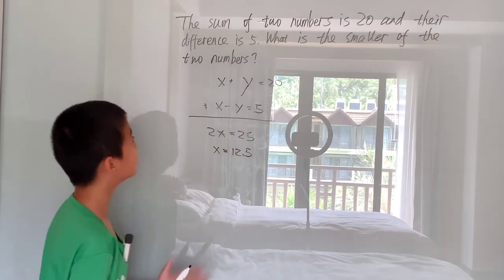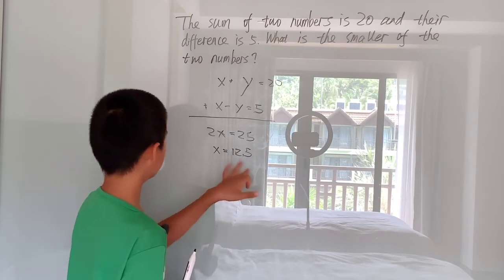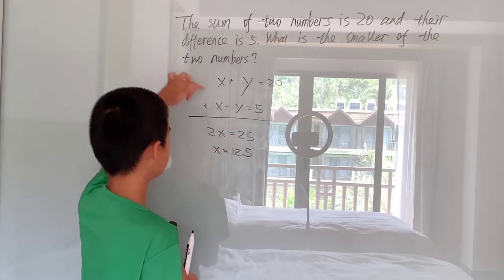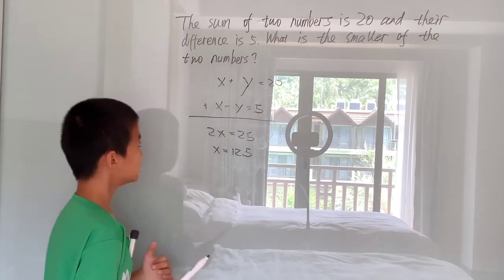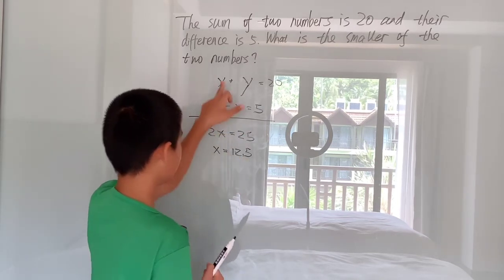Let's say x is 12.5. Now if x is 12.5, that means you can put x back up, put x back up there and see that, well, 12.5 plus y is 20.